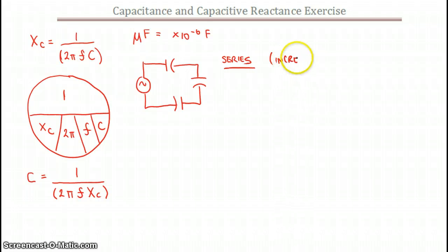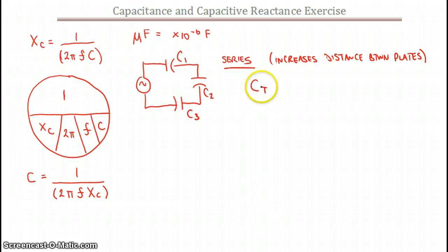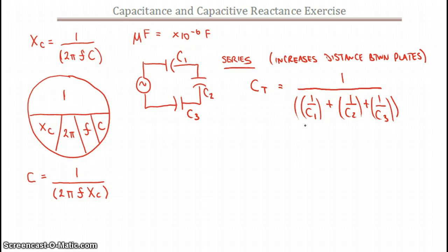Increases the distance between the plates. With series or parallel connections, we're either increasing or decreasing the size of the capacitor. In this case, we've increased the distance between the plates, which effectively decreases the amount of charge that you can have on the capacitors. So if I put C1, C2, and C3 to denote the three capacitors, our total capacitance — or total ability to hold a charge — would be 1 over C1 plus 1 over C2 plus 1 over C3. And that's our equation for total capacitance.